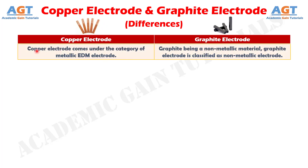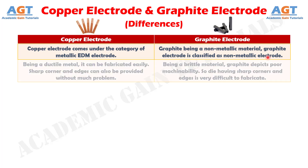Difference number 1: copper electrode comes under the category of metallic electric discharge machining electrode, whereas graphite, being a non-metallic material, is classified as a non-metallic electrode.